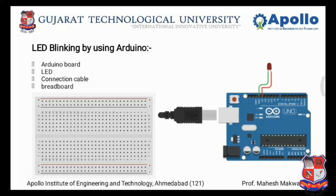For this practical, we basically need the following things: an Arduino board, an LED, a connection cable, and a breadboard. Actually, the breadboard is required for complicated practicals, but in this simple LED blinking practical, we don't require a breadboard. In the traditional way, you would purchase the Arduino, breadboard, LED, and connection cable. But we also have an alternate option — without purchasing all these elements, you can still perform the practical.